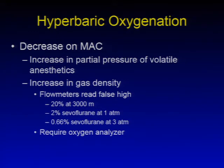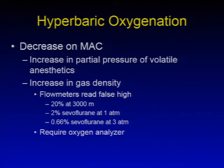Hyperbaric oxygenation may decrease MAC due to the increase in partial pressures of volatile anesthetics and the increase in gas density. Flow meters may read falsely high. There may be a 20% change at 3,000 meters. 2% sevoflurane at one atmosphere may be equivalent to 0.66% sevoflurane at three atmospheres. An oxygen analyzer may be essential in patients undergoing hyperbaric oxygenation.